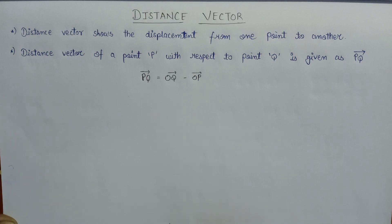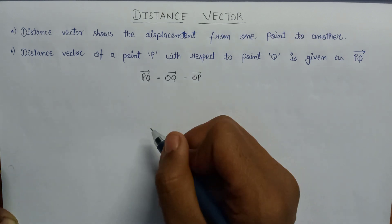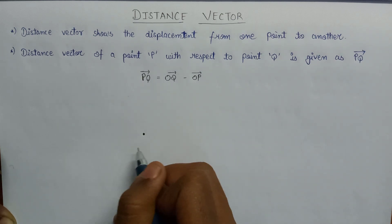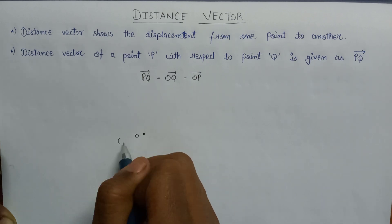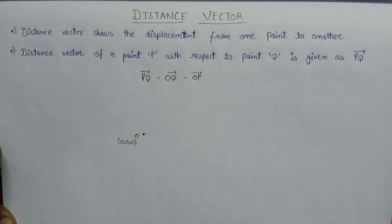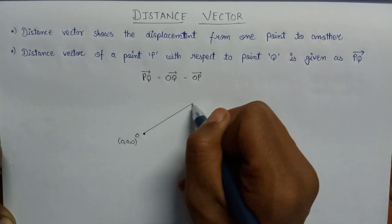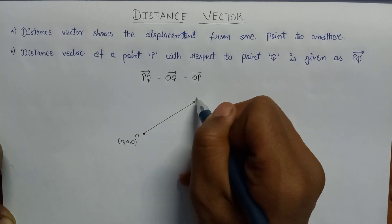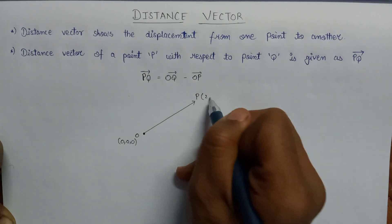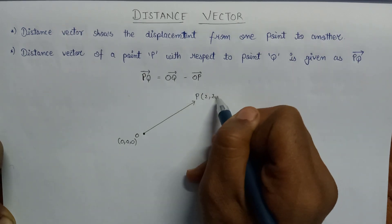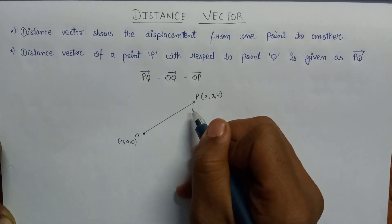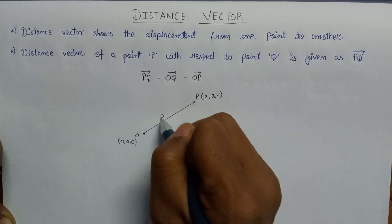Now let us plot this PQ vector on a plane. Let us suppose here is an origin represented by O having the coordinate 0, 0, 0. Here is a vector to point P having the coordinate 2, 3, 4. This is nothing but a positional vector, that is OP vector.